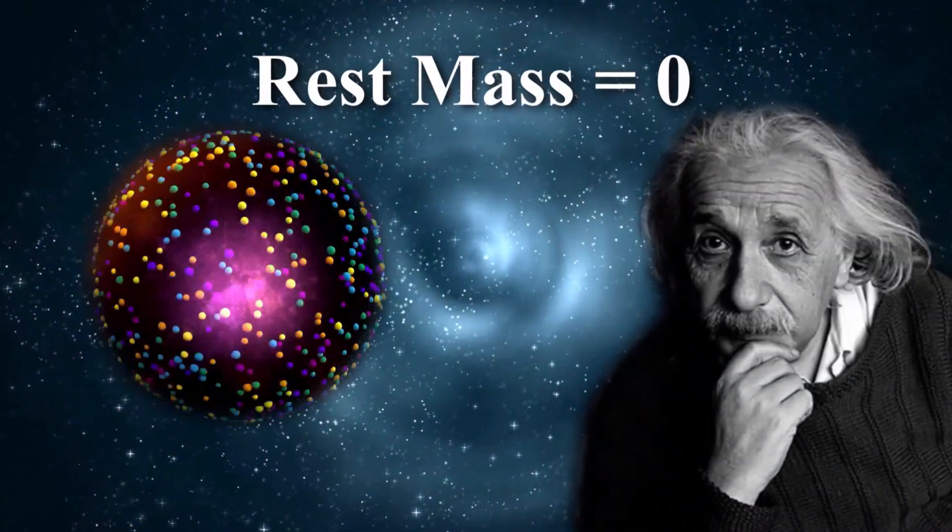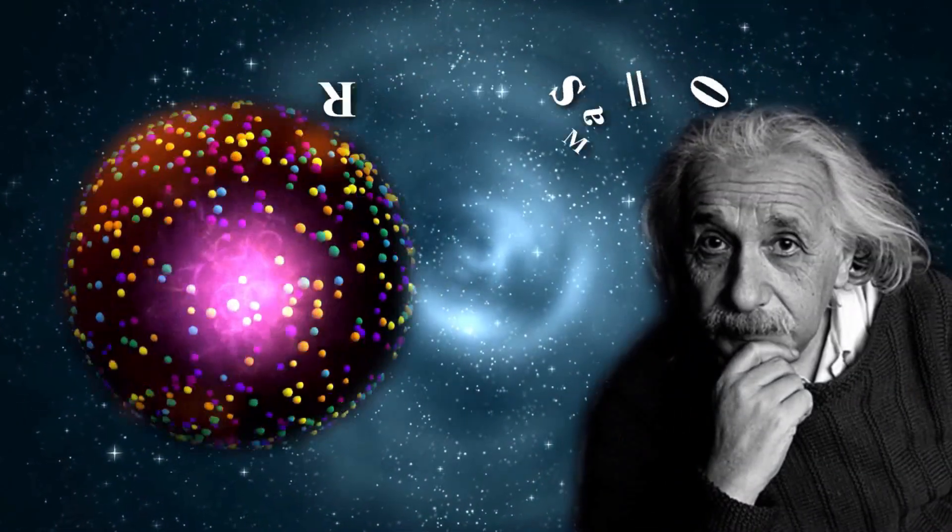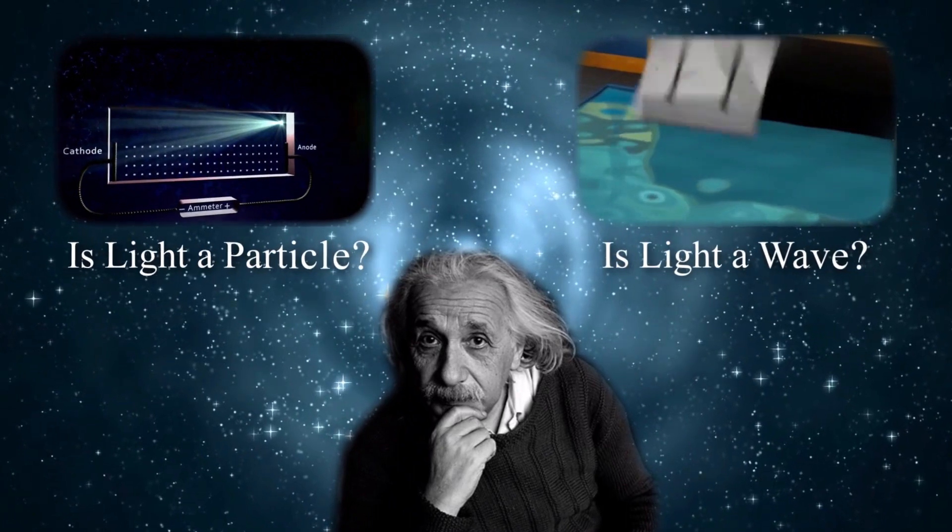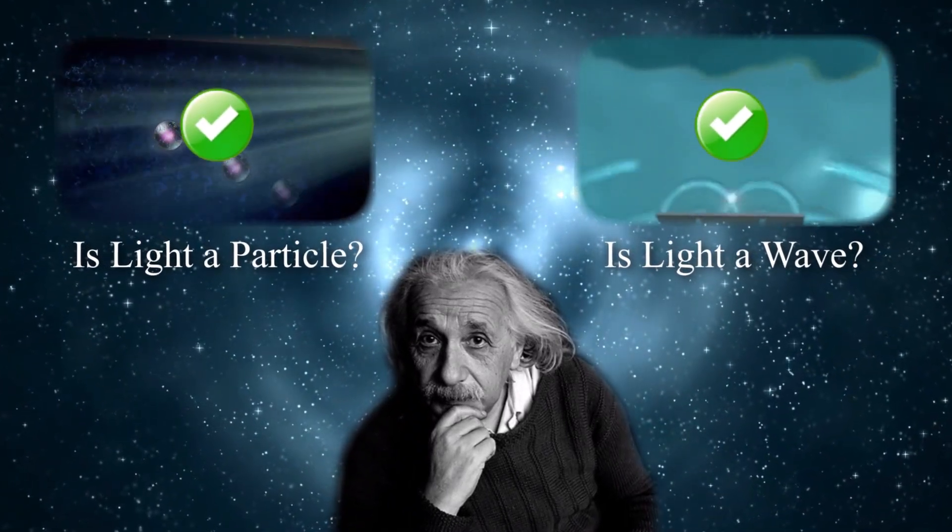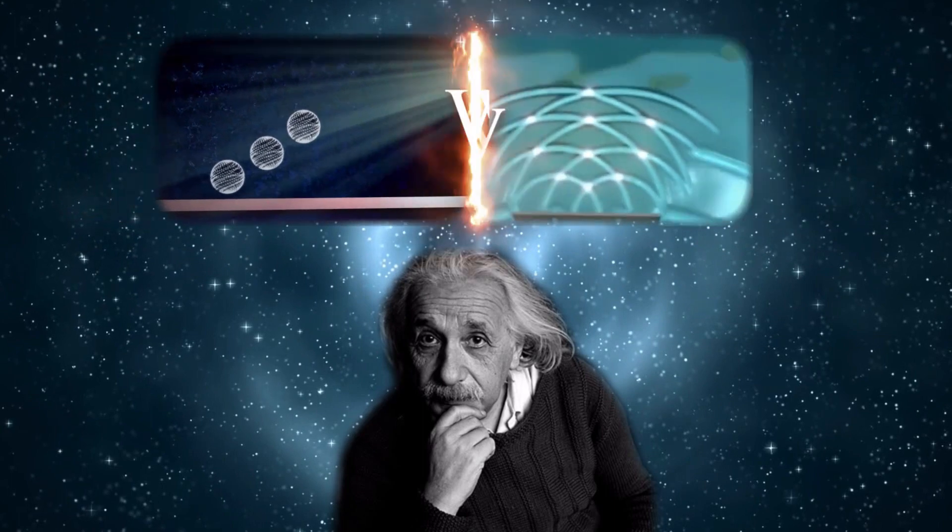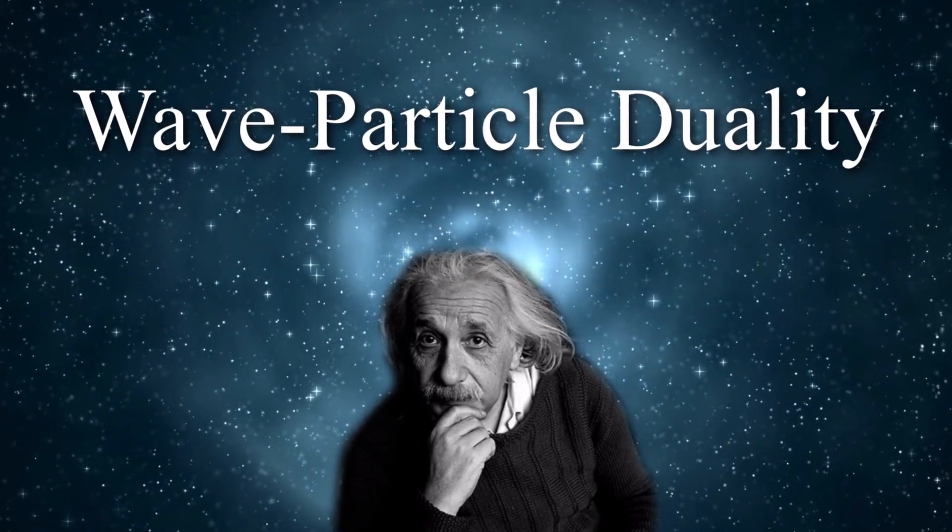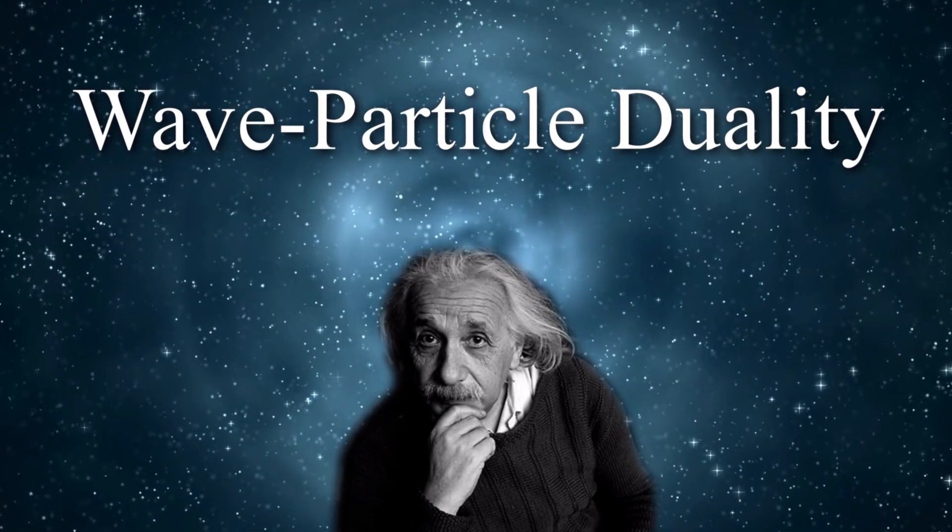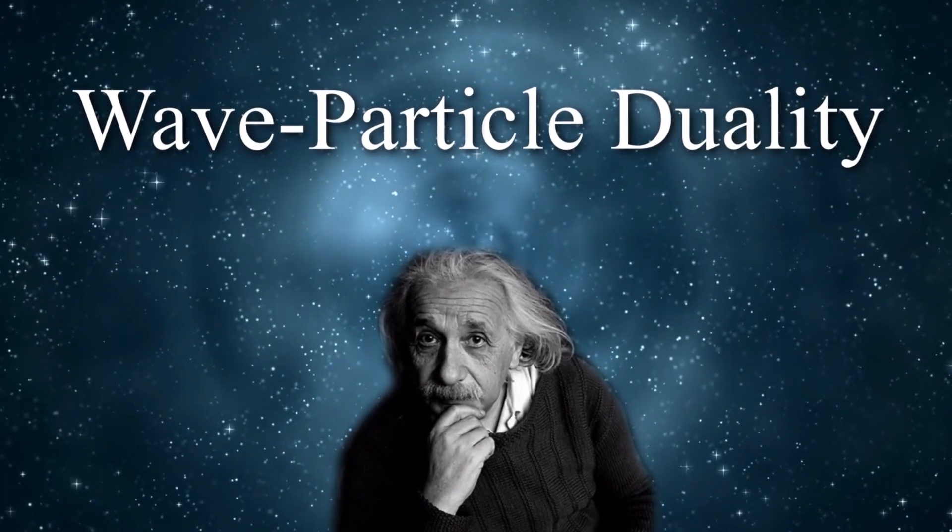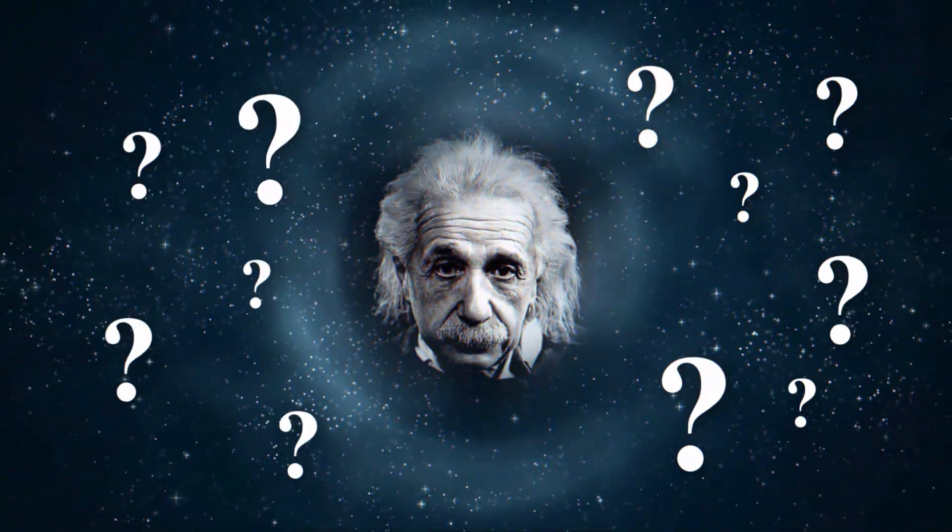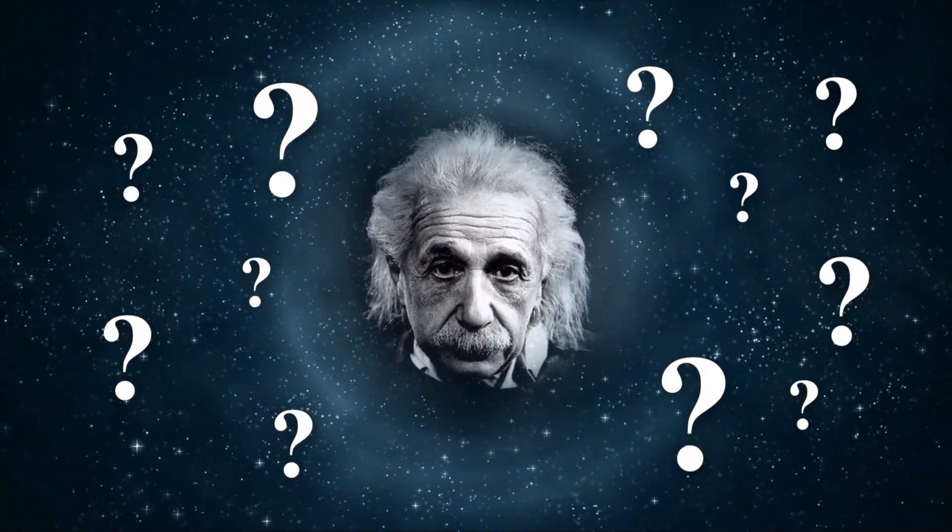Einstein defined a packet of energy with zero rest mass and explained both the double slit experiment and the photoelectric effect. On the other hand, it seems Einstein himself did not accept wave-particle duality and knew that as only a temporary way out.